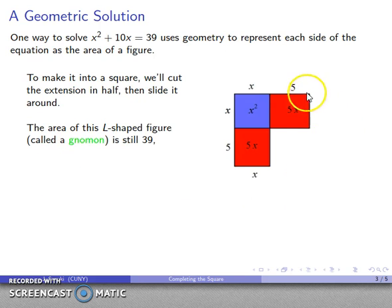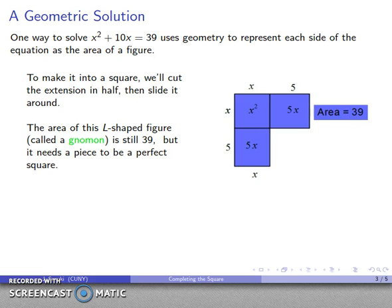Now part of what makes this work is that this piece here is a 5 by x rectangle, so I know that a 5 by x rectangle can fit on the bottom of this square. And what I have is this L-shaped region that's called a gnomon. And it's the same as the original figure, it's just been moved around a little bit. So the area of this region is still equal to our original value 39. So maybe I'll just make a note of that, the area of this is equal to 39.